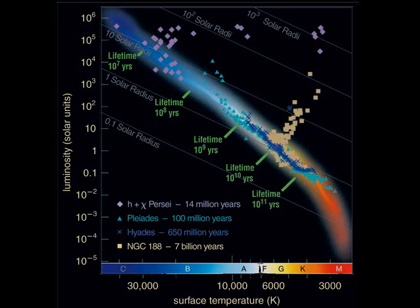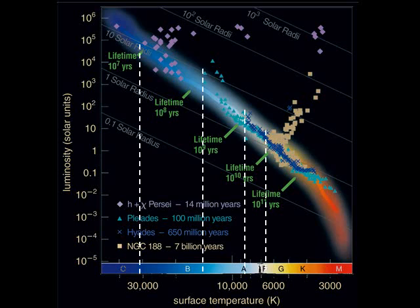This figure compares the main sequence of other open clusters. In each case, the age of the cluster is equal to the lifetime of the stars at its main sequence turnoff point. The older the cluster is, the more stars that have turned off the main sequence and the redder its turnoff point.